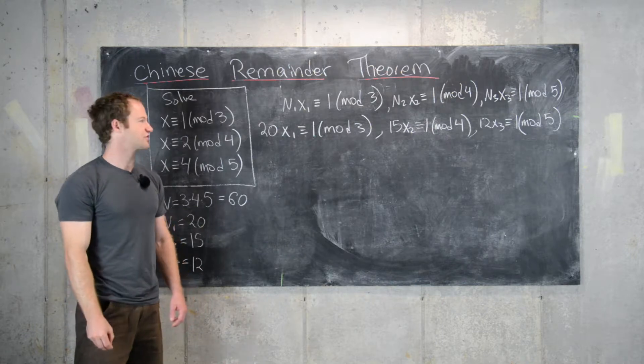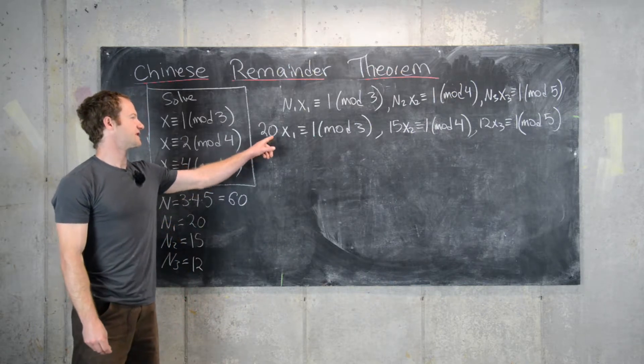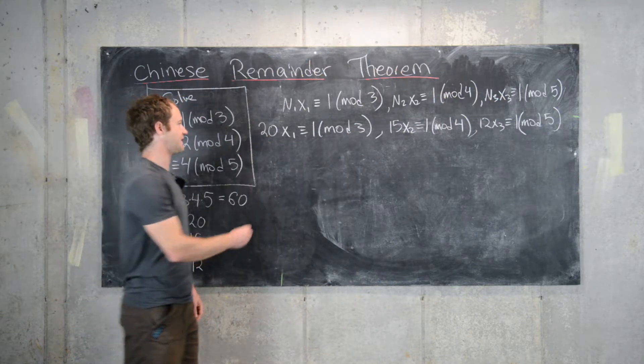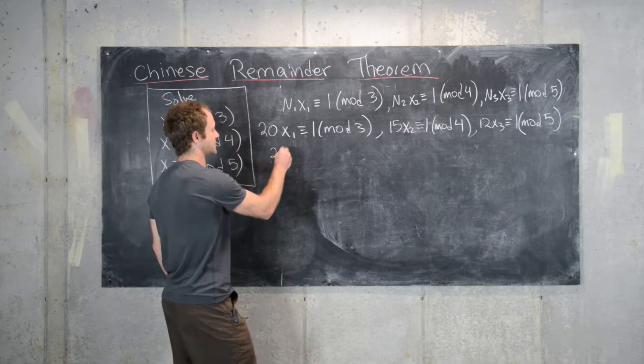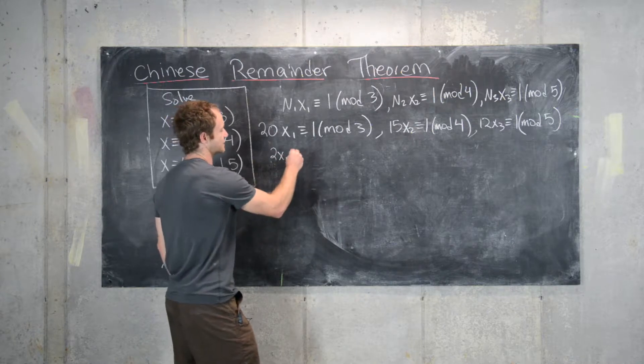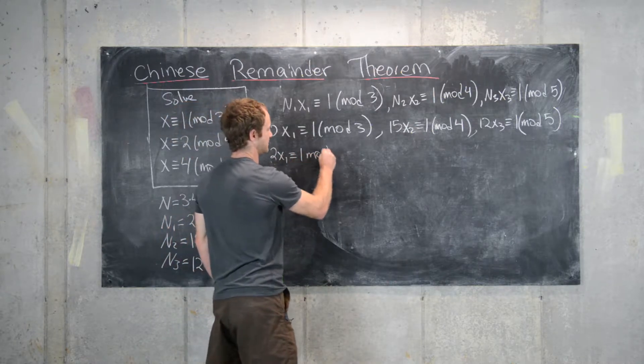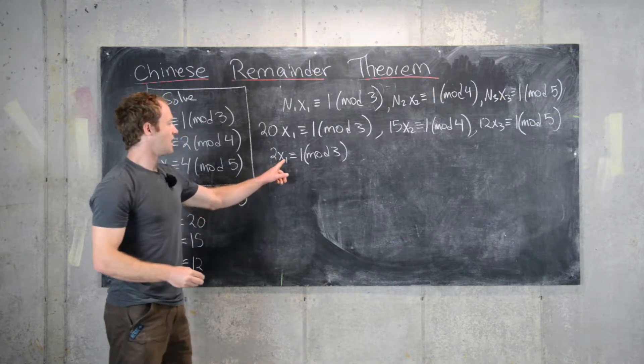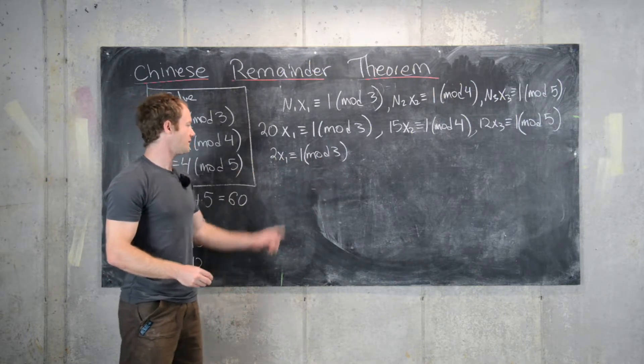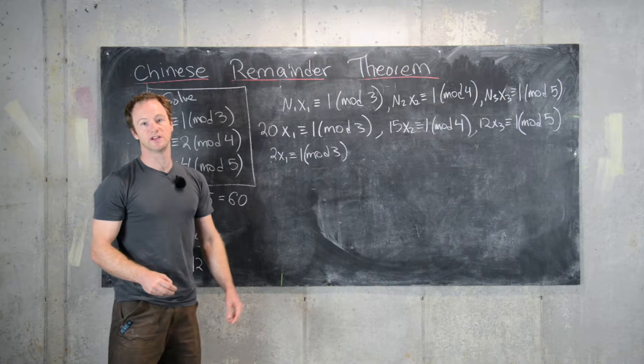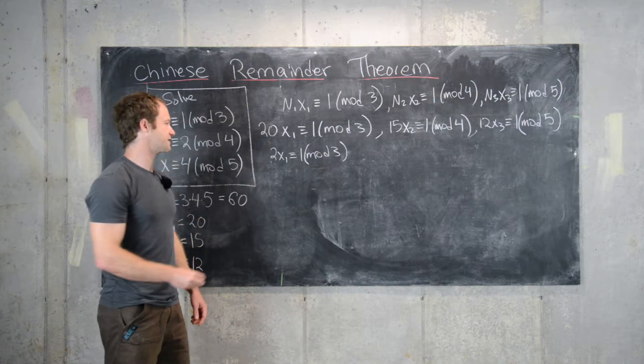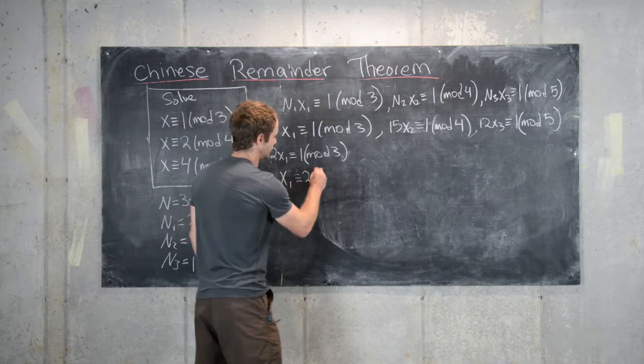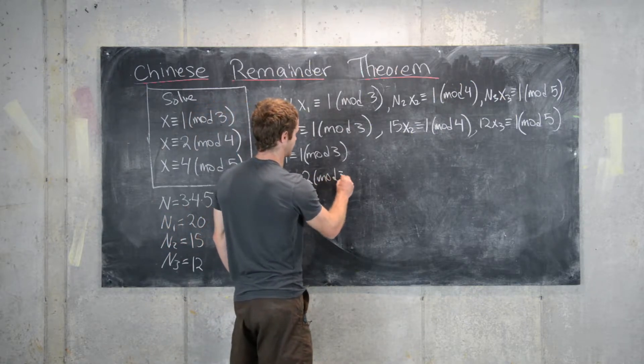Some simplification is in order before we actually go about solving these. 20 mod 3 is the same thing as 2 mod 3, so we want 2x1 is congruent to 1 mod 3. Now it's a bit easier. Working mod 3, we notice that 2 times 2 is 4, and 4 is 1 mod 3, so that means x1 is congruent to 2 mod 3. So we can take x1 to be 2.